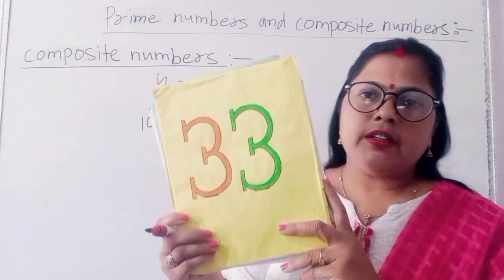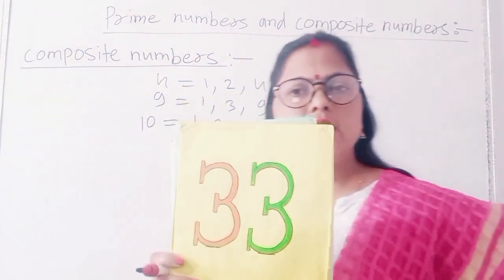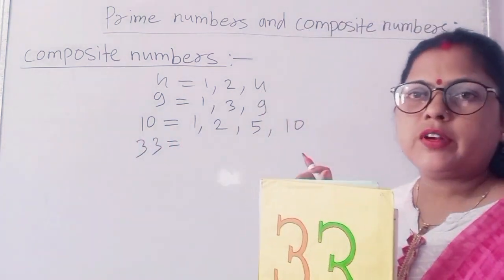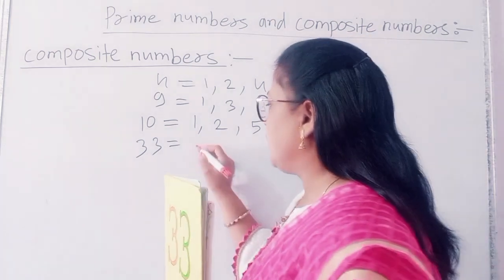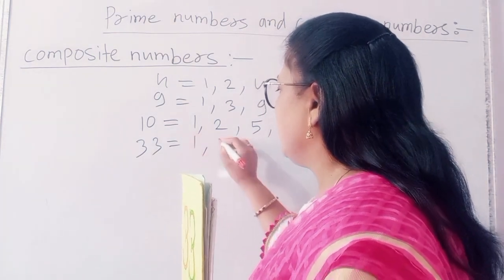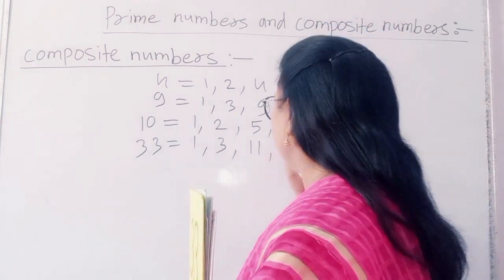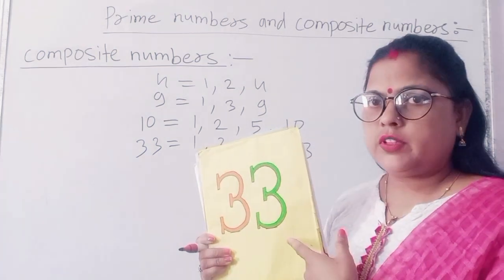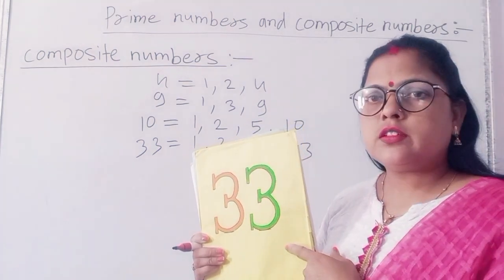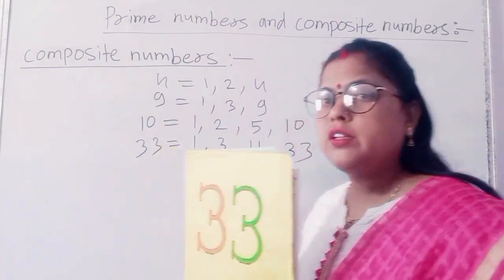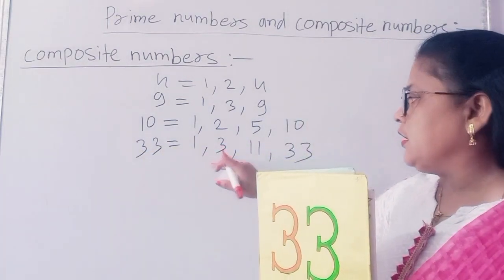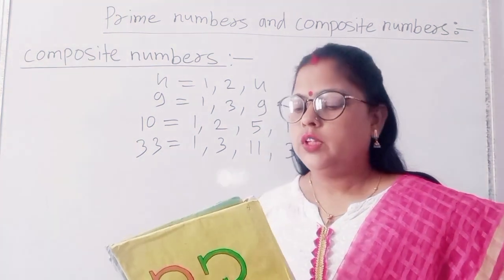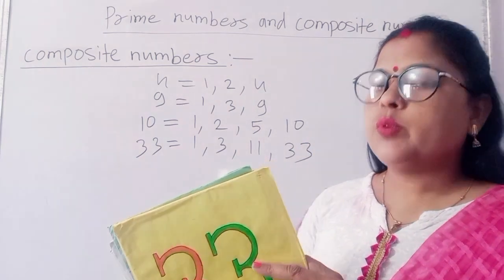Next, the number is 33. How many factors does 33 have? First I will find the factor of 33. The factors of 33 are 1, 3, 11, and 33. So 33 is also a composite number because it has more than 2 factors. It has 4 factors: 1, 3, 11, and 33.